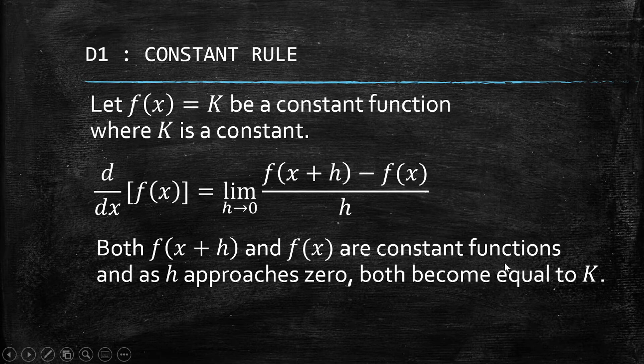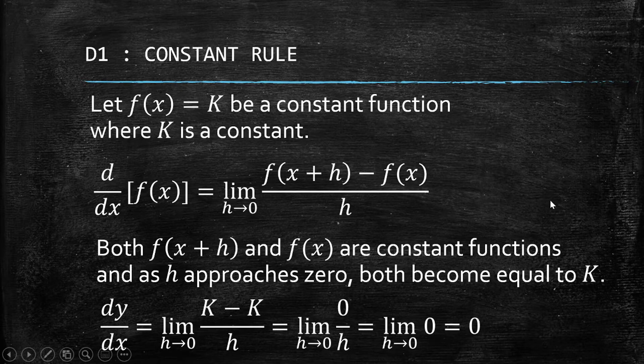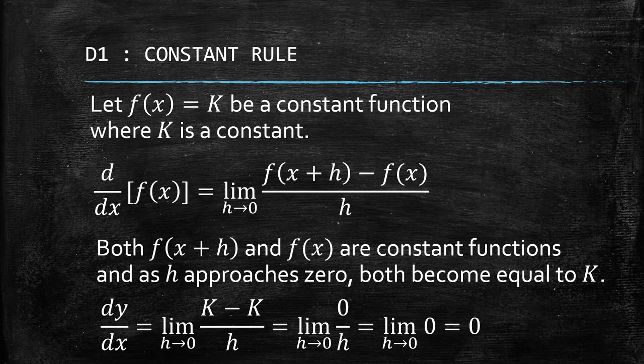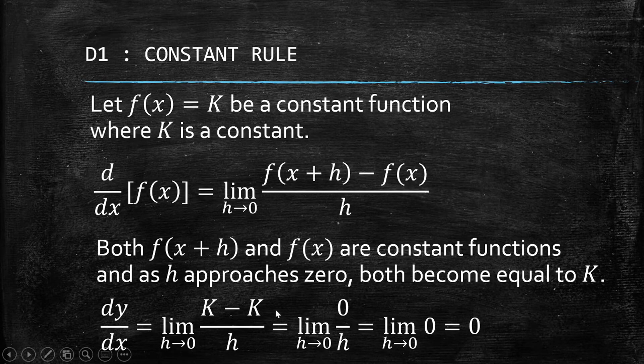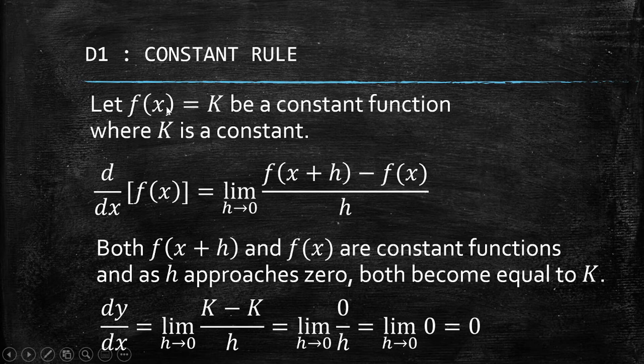As h approaches zero, f(x + h) and f(x) become equal to K itself. Hence, our derivative now, instead of f(x + h)—take note h is approaching zero—is already assumed to be K, and f(x) is also K based on our assumption.